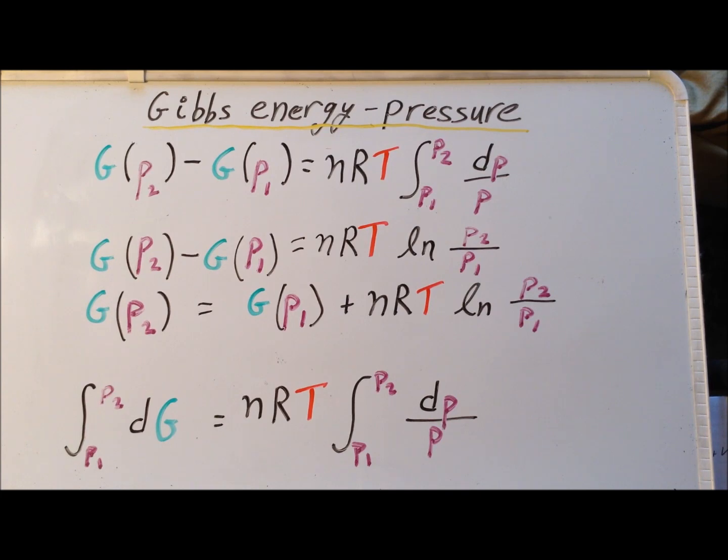Then simply adding G of P1 to each side, we get our final result, that G at pressure 2 is equal to what G was at pressure 1 plus nRT times the natural log of P2 divided by P1.